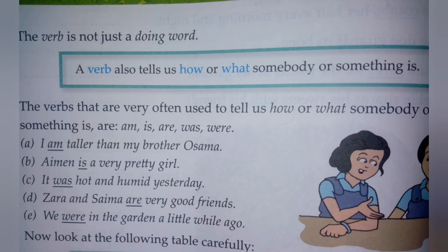A verb is not just a doing word — a verb also tells us how or what somebody or something is. So verb means action, but a verb is not only the word that describes the action. It also describes the time and situation: how or what somebody or something is. The verbs that are very often used to tell us this are: am, is, are, was, were.